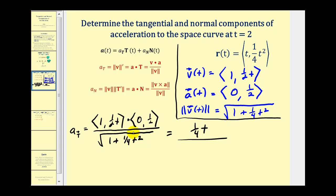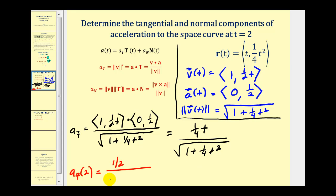With a denominator of the square root of one plus one fourth t squared, we substitute t equals two: the numerator becomes one fourth times two, which is one half. The denominator becomes the square root of one plus one fourth times four, which is the square root of two. So the tangential component of acceleration at t equals two is one over two square root two.